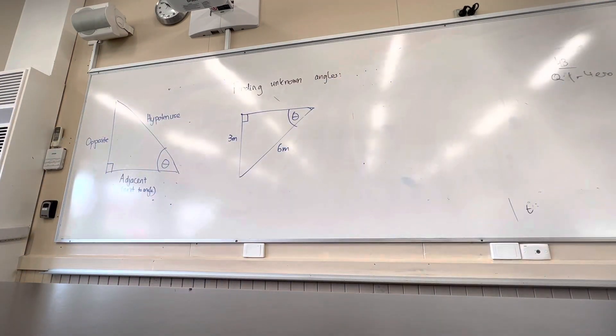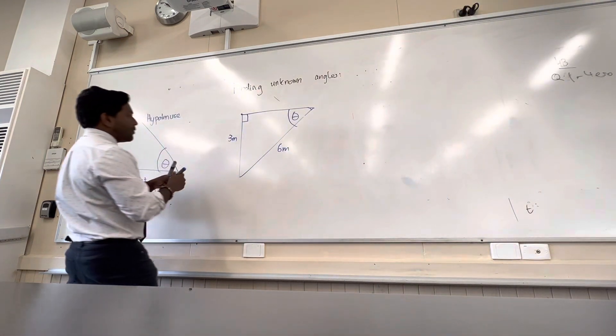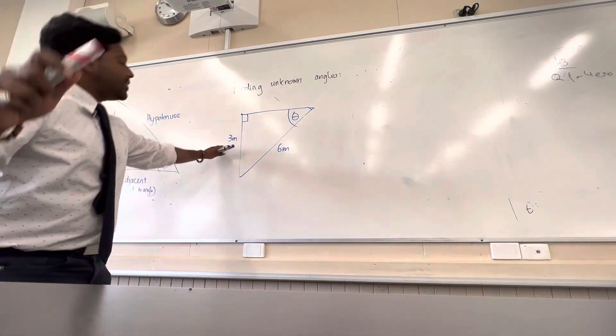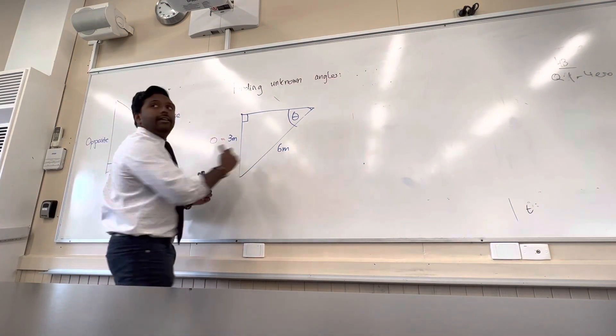We need to find out this angle, and the way we're going to go about it is literally the same way we did it to find out the unknown side length. Harper, what's the first step that I usually go through? Label. Cool, let's label it. So what are you going to label this side, Harper? This side, the three meters - opposite. Brilliant work, Harper.